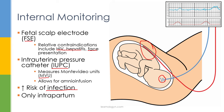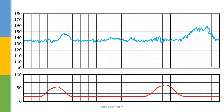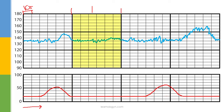Since membranes must be ruptured for internal monitors, they are only used intrapartum. A standard fetal monitor strip has the heart rate on top and contractions on the bottom. The x-axis represents time — each small block is 10 seconds, with a dark line every six blocks representing one minute. The y-axis shows beats per minute, typically in 10 bpm increments. If using an IUPC, the lower section shows MVU values. The maternal heart rate may also appear, usually hovering around 80–100 bpm.